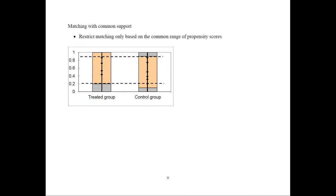Common support means restricting matching to the overlapping range of propensity scores between treated and control groups. For example, if no treated observations have propensity scores below 0.2, all control observations with scores below 0.2 are excluded because they would be poor matches and fall outside the common support.